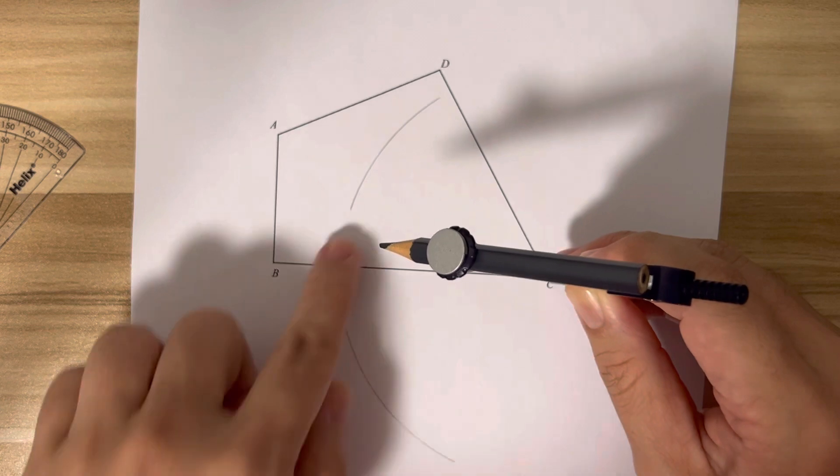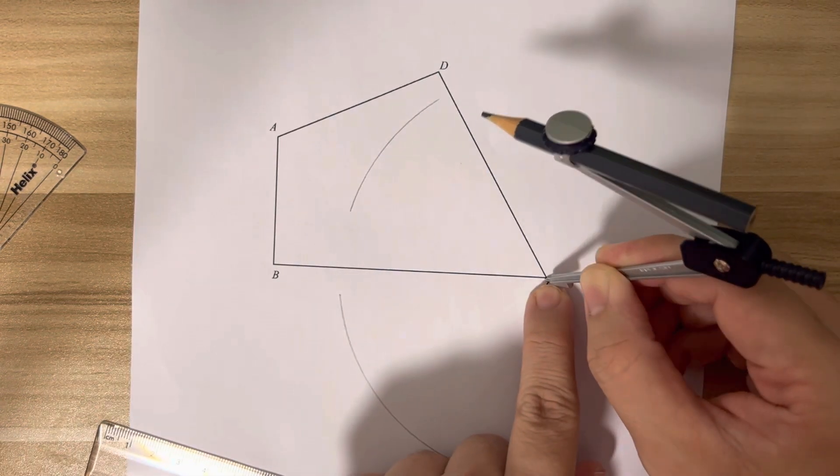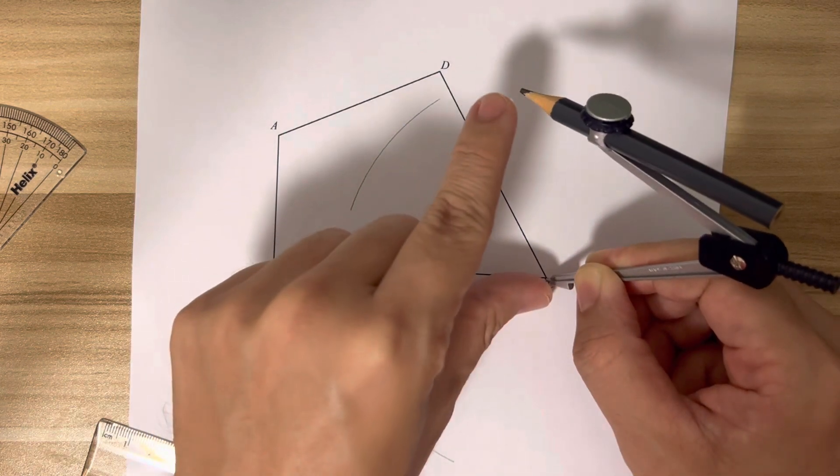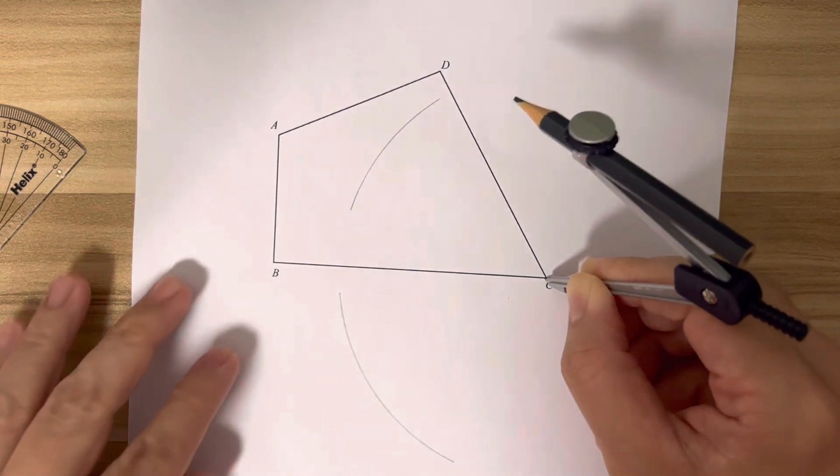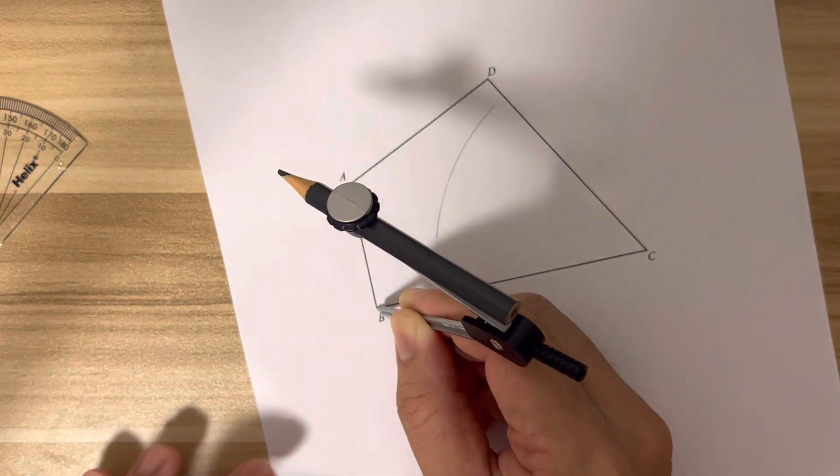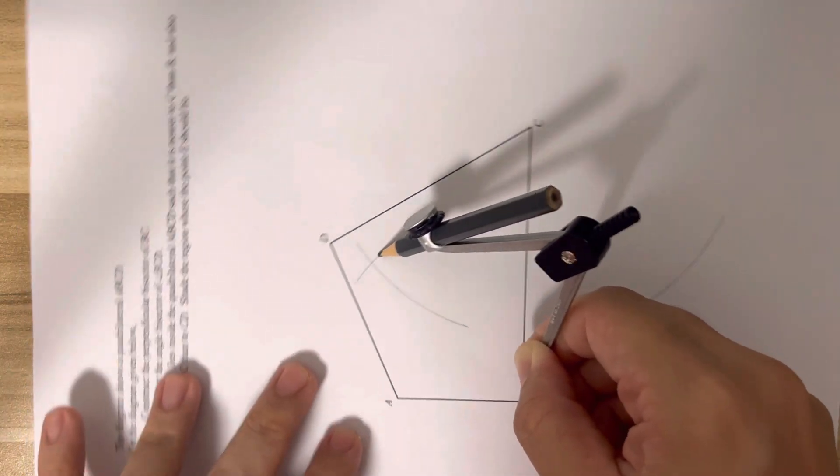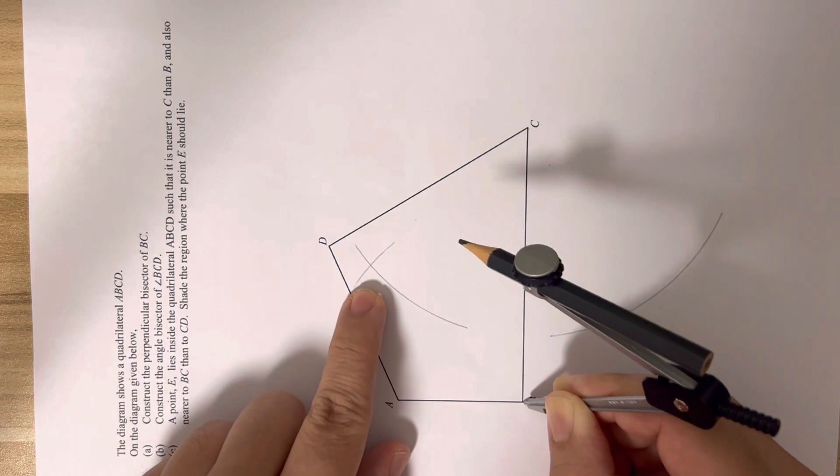It should be somewhere in the middle. Move this pointer tip to the other point, making sure I don't change the distance here. And any time you can actually turn the paper. You realize that it should cut.